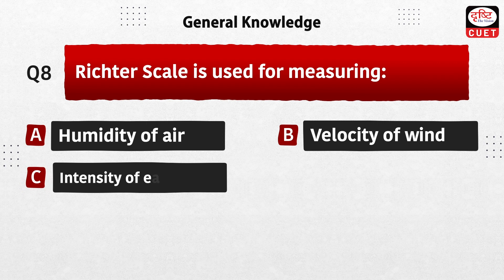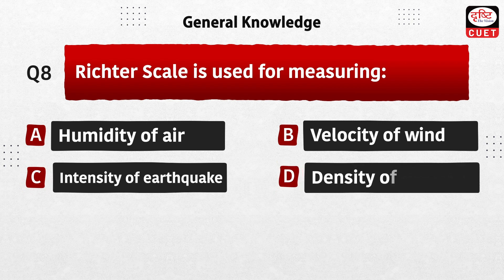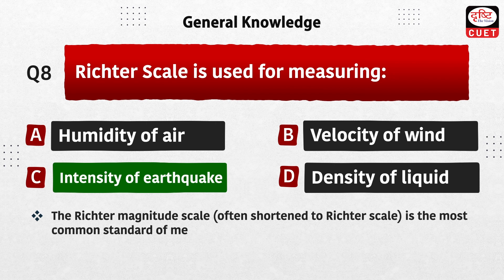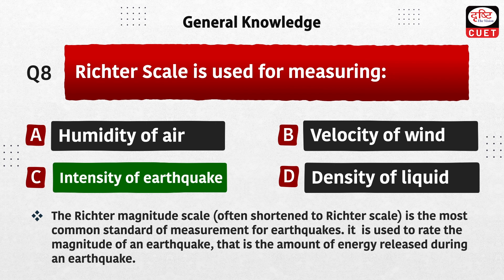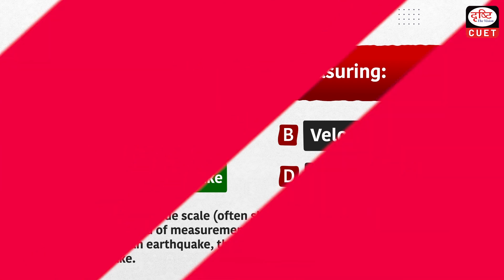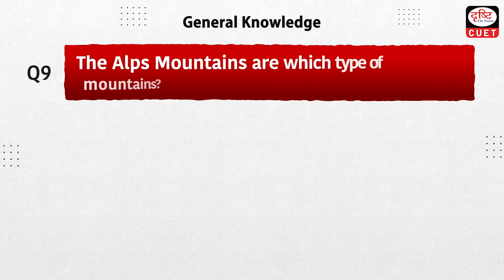Next question: the Richter scale is used for measuring — humidity of air, velocity of wind, intensity of earthquake, or density of liquid? The correct answer is option C, intensity of earthquake. The Richter magnitude scale is the most common standard of measurement for earthquakes. It is used to rate the magnitude of an earthquake, that is, the amount of energy released during an earthquake.